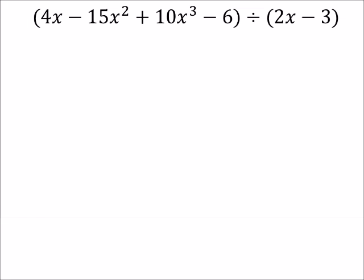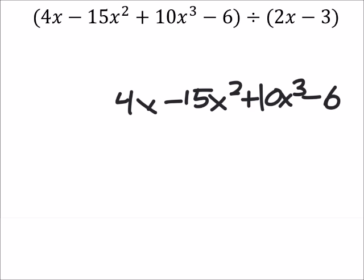So, we got our numerator here, which is also called the dividend, which is the 4x minus 15x squared plus 10x cubed minus 6. So this one's a little funky because we got an x and then we got an x squared and an x cubed.